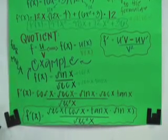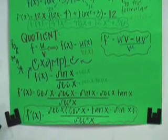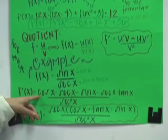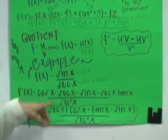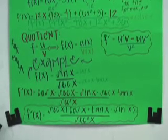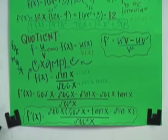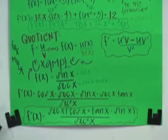And as in the product formula, you have to plug in the numbers. So all you do is, right here, you put cosine x times secant x minus sine x times secant x tangent x, all over secant squared x.